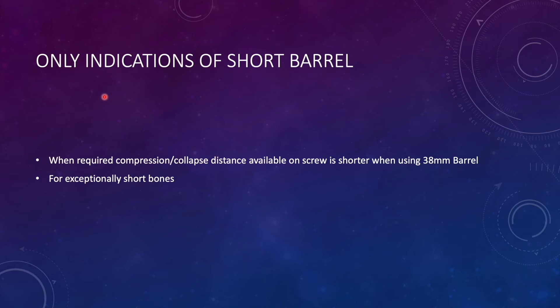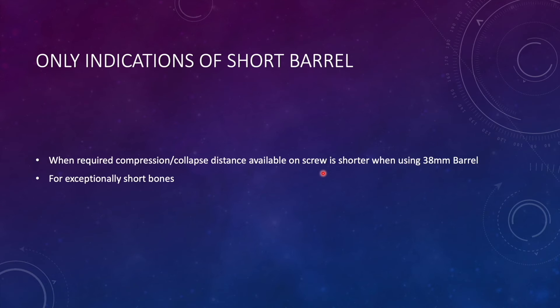The indications for short barrel dynamic hip screw are when the required compression and collapse distance available on the screw is shorter when using the 38 millimeter barrel — that is, it is coming out to be less than 25 millimeter. Also, in cases of short bones where the overall screw length is definitely going to be short, we can also use the short barrel dynamic hip screw.